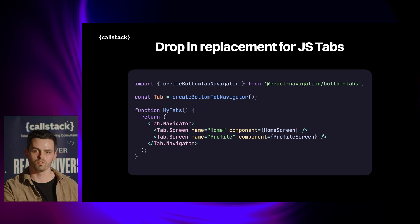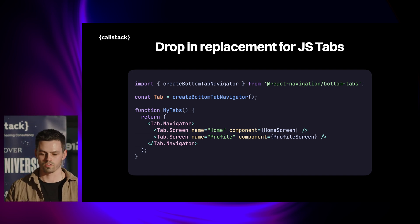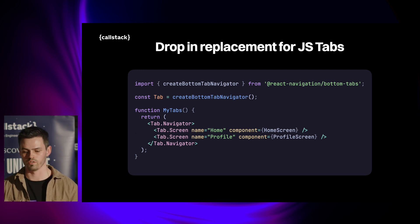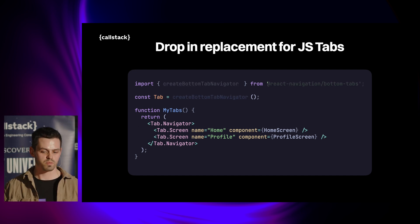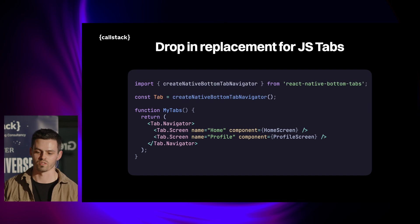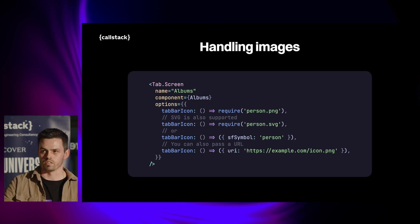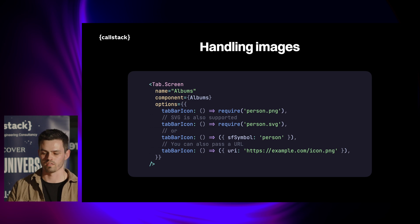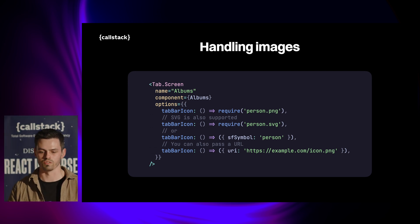The library is designed to be a drop-in replacement for the JavaScript bottom tabs. You've probably already seen this code — it creates a bottom tab navigator using React Navigation slash bottom-tabs. To replace it with native bottom tabs, you just replace the import and create the native bottom tab navigator. Of course, there are tradeoffs: because the library is native, you can't pass custom React elements as tab bar icons — it has to be a static file or remote URL. But the icon can be any image, including SVG.